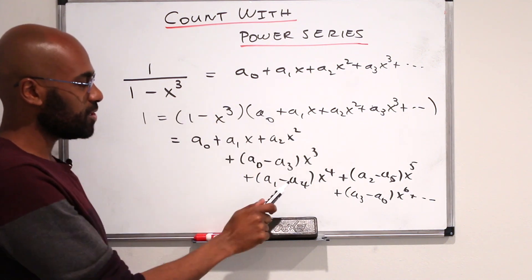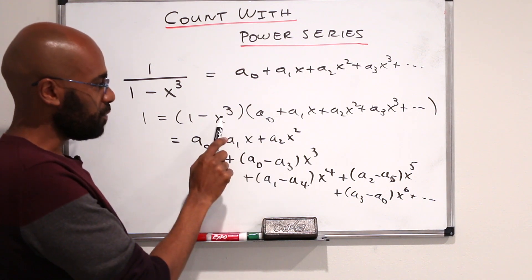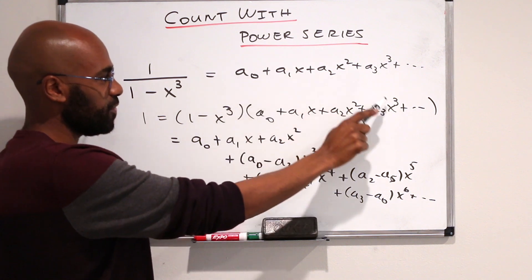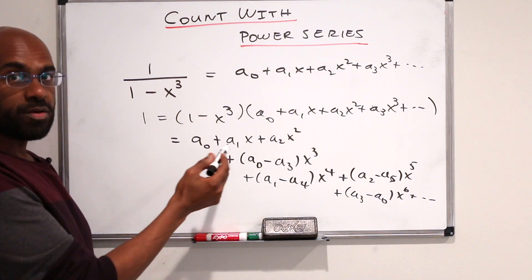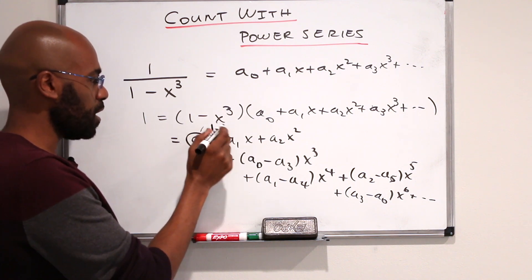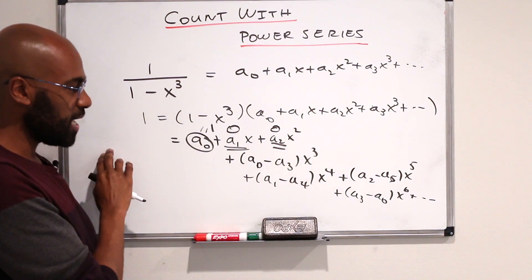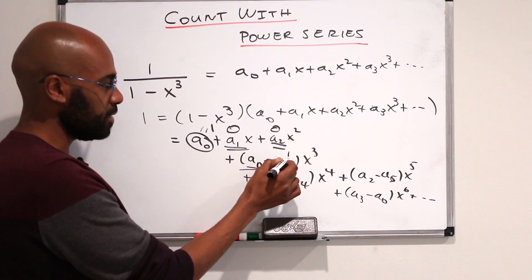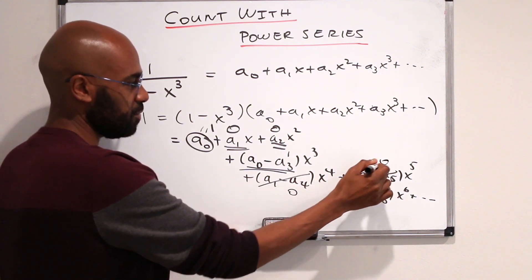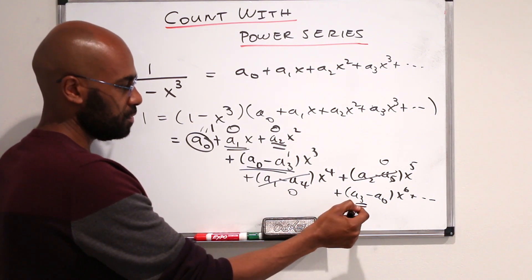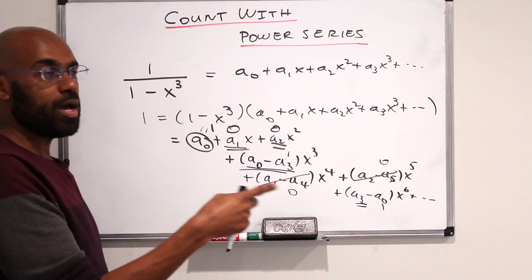If we expand this and collect terms, we see that the first three terms will have A0, A1, and A2, and then we'll get differences that are three apart. Like we have negative A0 x cubed plus A3 x cubed, and negative A1 x to the fourth plus A4 x to the fourth. Comparing coefficients with both sides, we see this quantity has to be one, whereas these two things are zero. A3 will be forced to be one because A0 is zero. So every third term will be a one and all other terms will be zero.